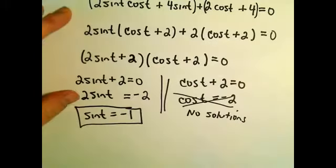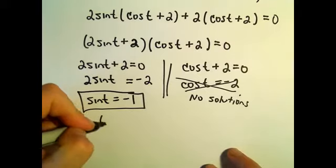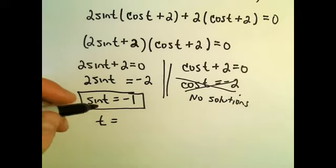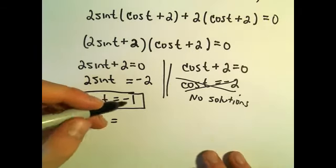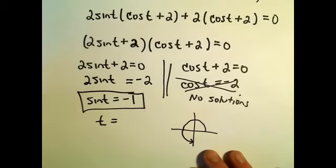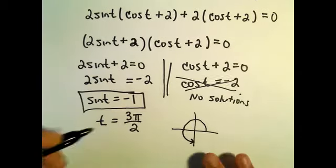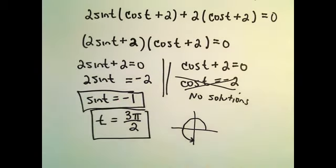We just wanted solutions in the interval 0 to 2 pi. The only angle where sine equals negative 1, sine is the y-coordinate, so sine is going to equal negative 1 at the angle 3 pi over 2, and that would be our lone single solution to this equation.